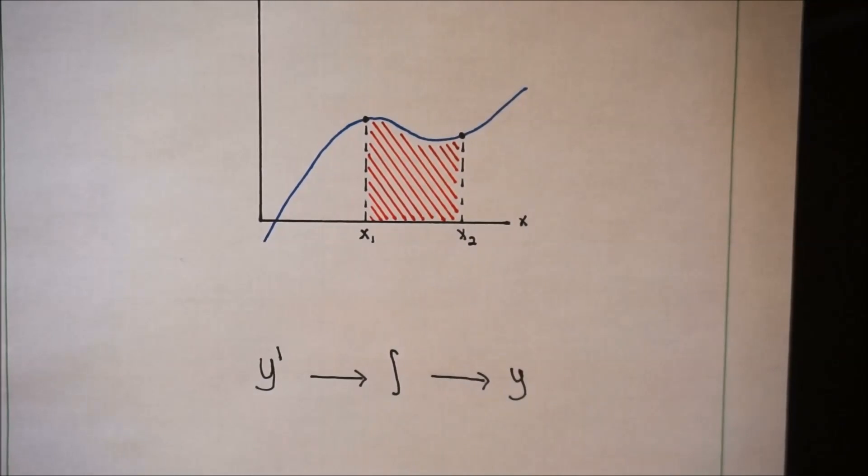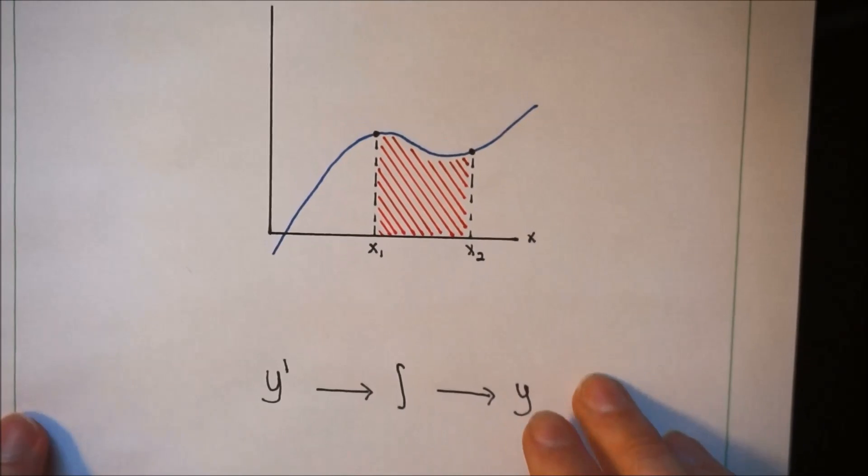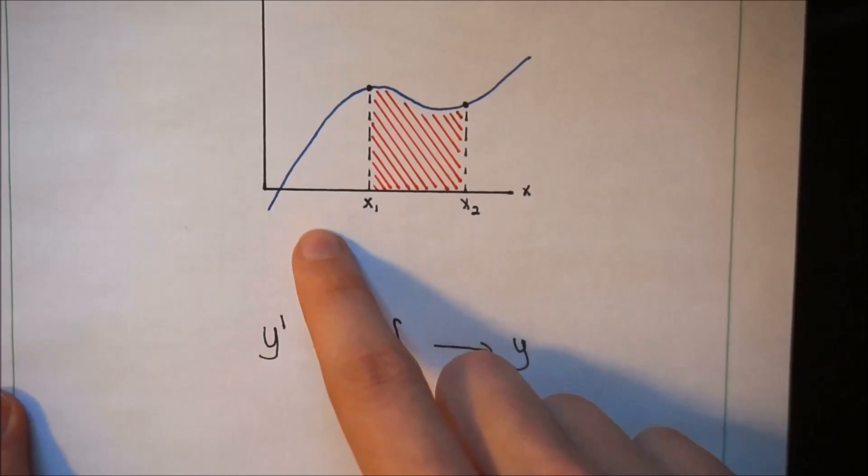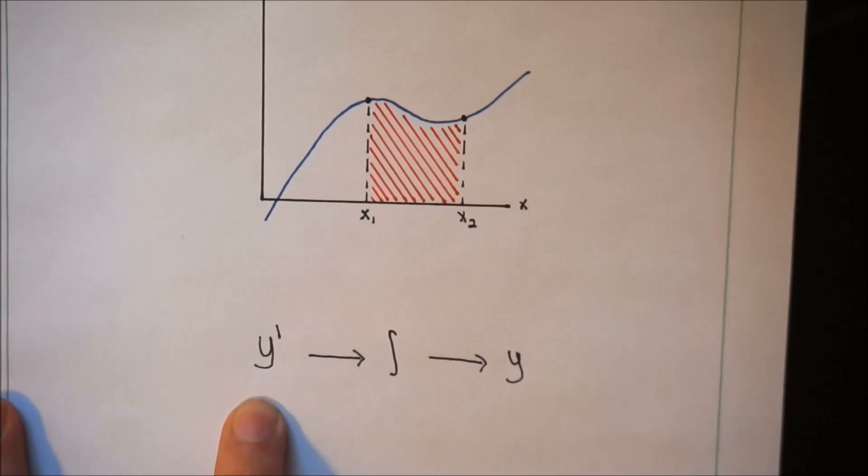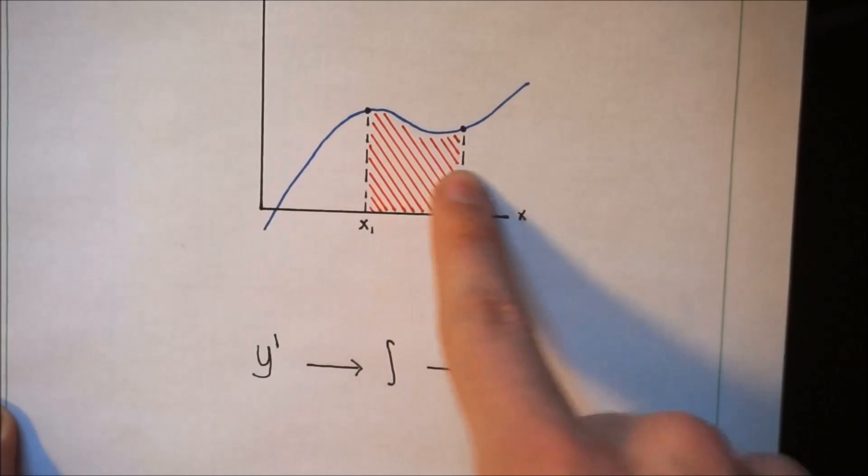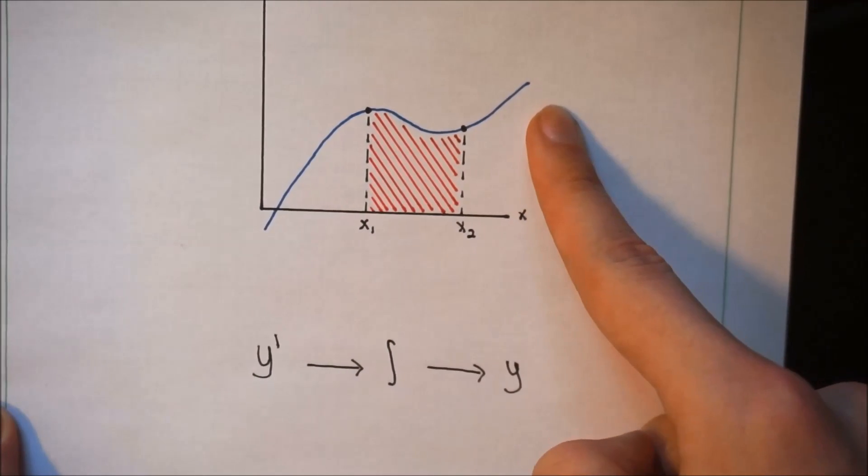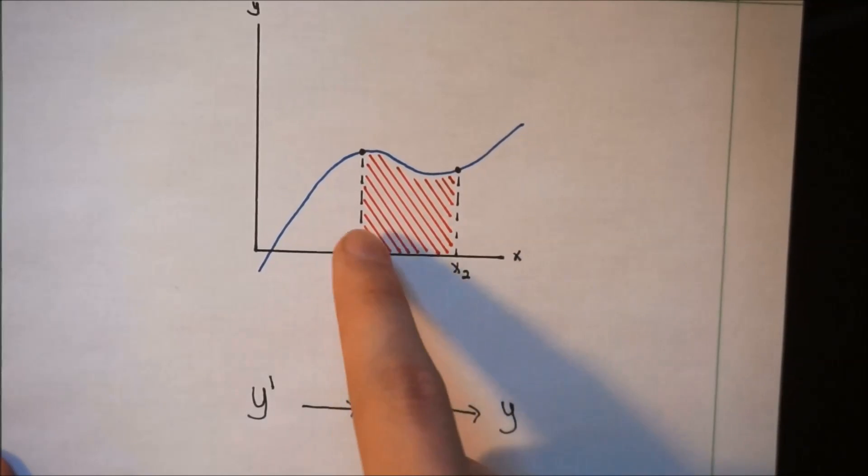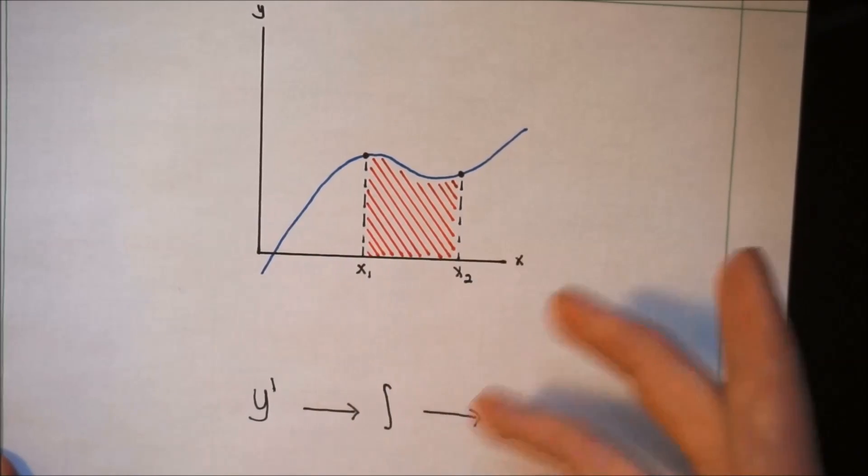The integral, or antiderivative. So in this case, our blue line here is the y prime. Let's say this is the velocity and we want to know how far our object went. You would have to find the area under the graph, and that would give you displacement.